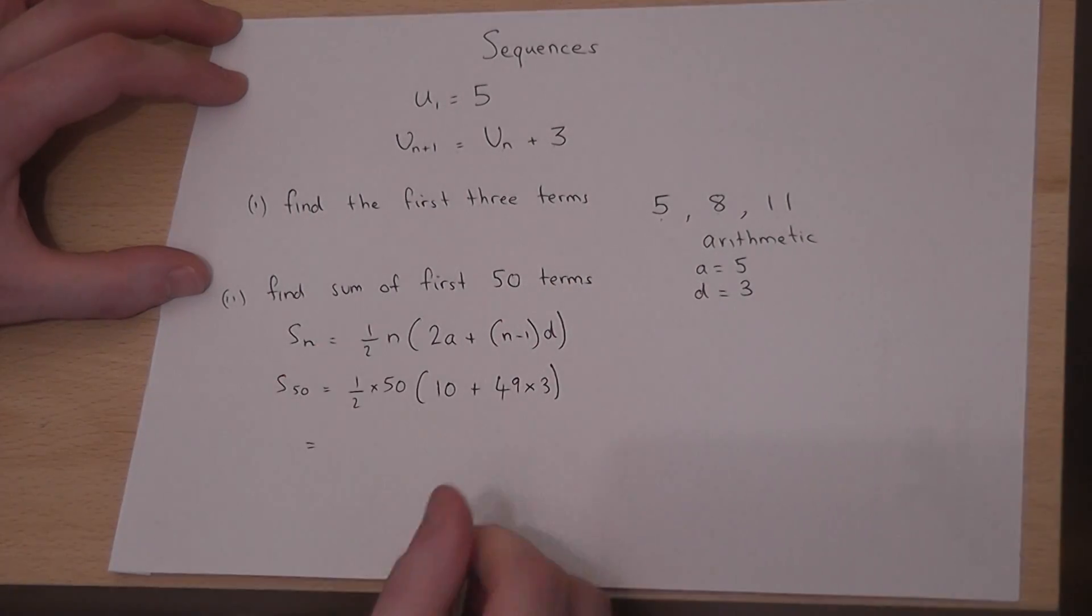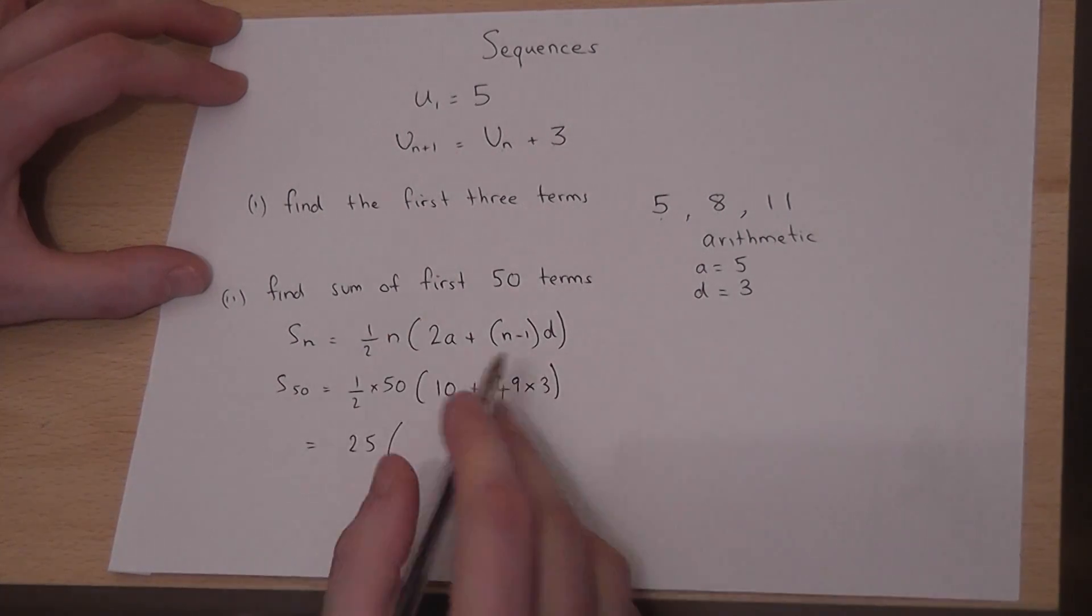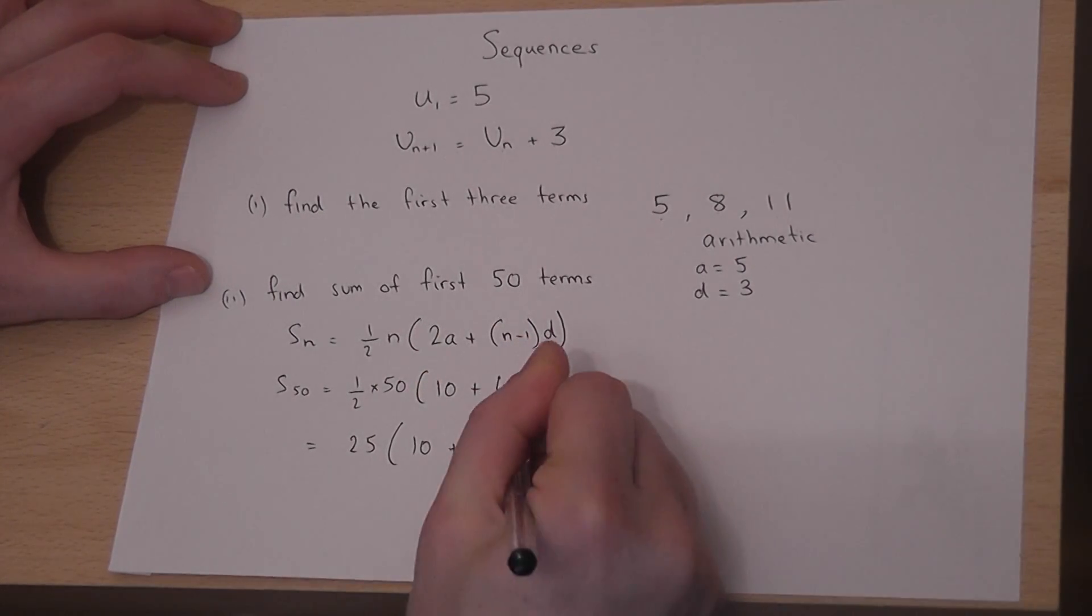So we have to work out a half of 50 is 25. So it's 25 times 10 plus 49 times 3 is 147.